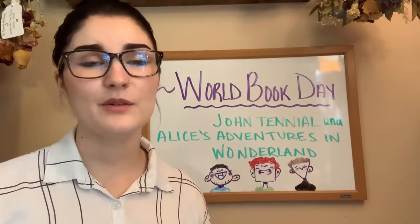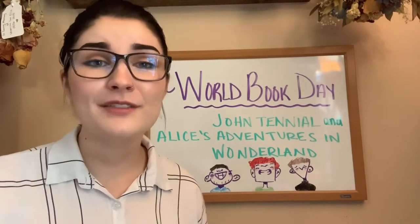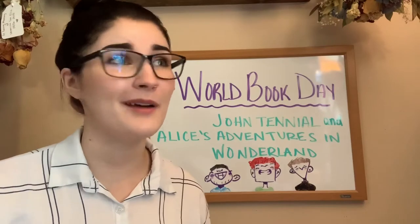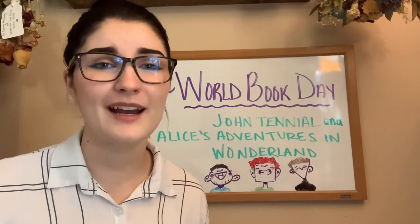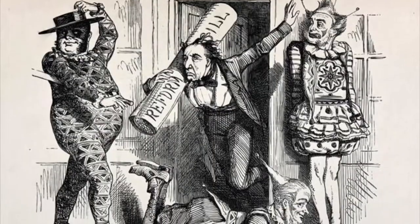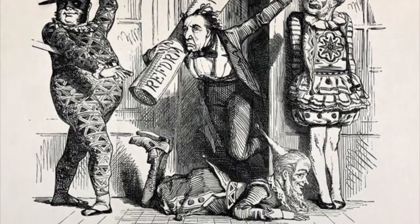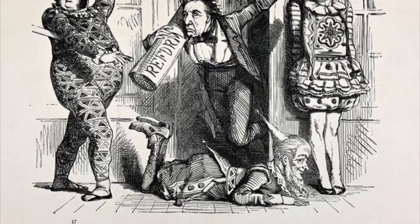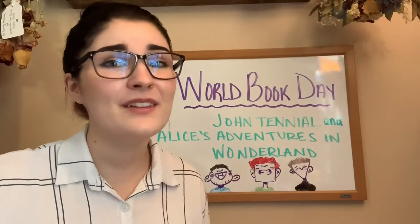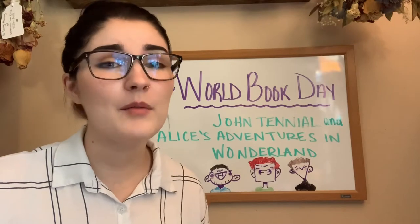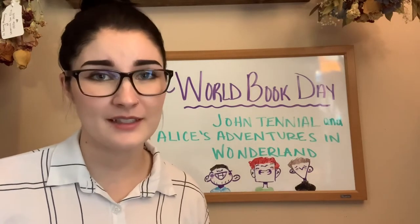John Tenniel was an illustrator born in 1820. Most of his life, from about 1850 to when he retired in 1901, he was working for a periodical called Punch. Every week he was releasing political and satirical cartoons, but even then, we probably still mostly know him from his book illustrations.